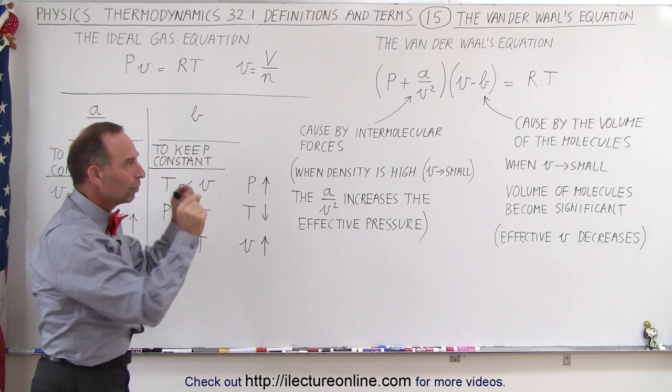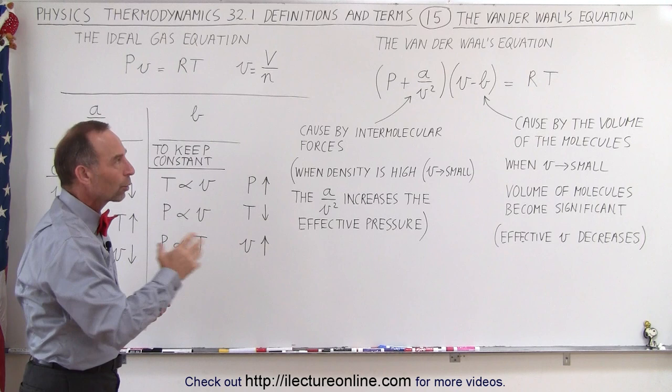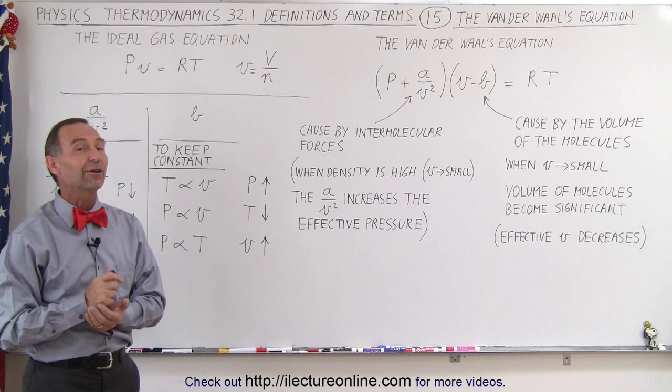how does it affect the third variable? What do we need to do to the third variable to keep the other two the same? Once you get the feel for that, it becomes a lot easier to work with the van der Waals equation. If you don't get that under control, the van der Waals equation can get very confusing.